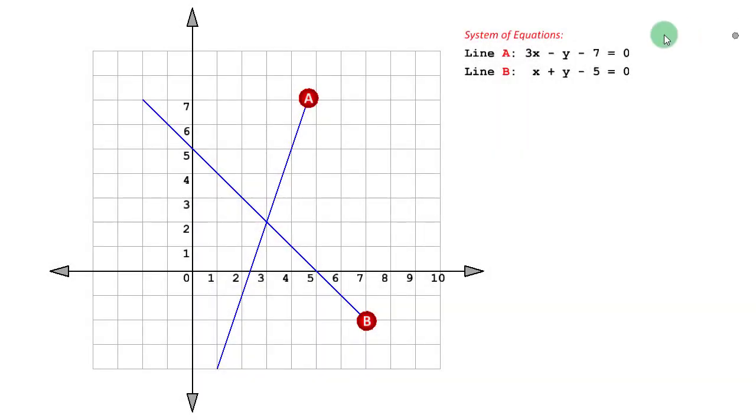In the previous video, we saw how we can start with a pair of linear equations in two variables, which are nothing but two straight lines in the xy-frame, and how we can blend them together using what is called the linear combination. We took the first equation and added to that some multiple of the second equation.